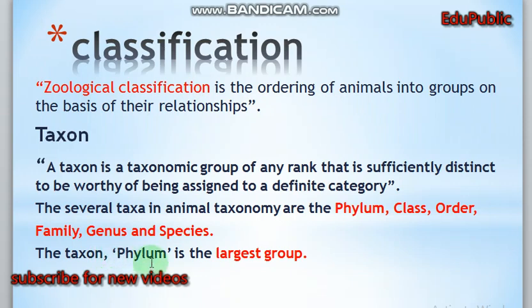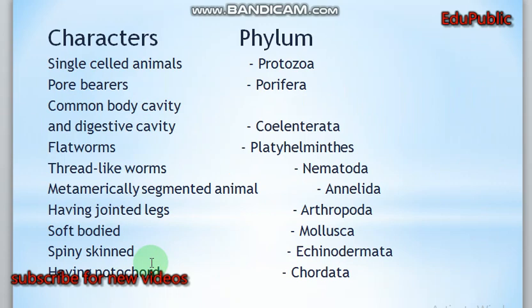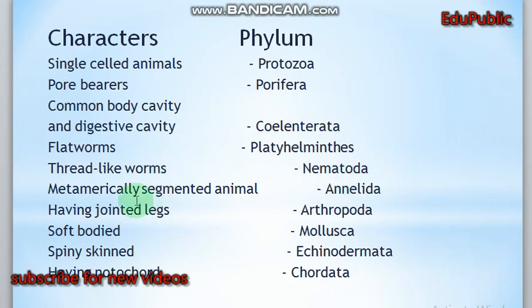Characteristics of some phyla: single-celled animals are called Protozoa; pore-bearing animals are in phylum Porifera; animals with a common body cavity and digestive cavity are in phylum Coelenterata; flatworms are in Platyhelminthes; thread-like worms are in phylum Nematoda; segmented animals are in phylum Annelida; animals with jointed legs are in phylum Arthropoda; soft-bodied animals are in phylum Mollusca; spiny-skinned animals are in phylum Echinodermata; and animals having a notochord are in phylum Chordata.